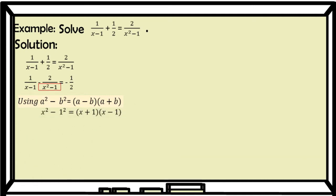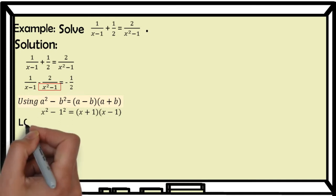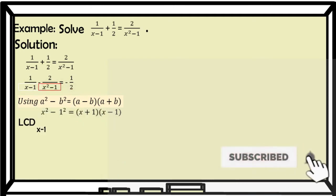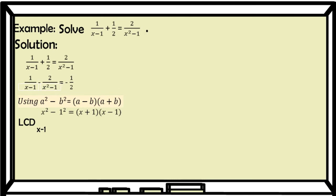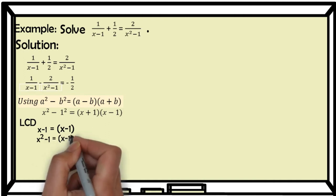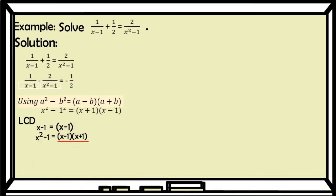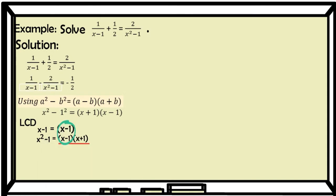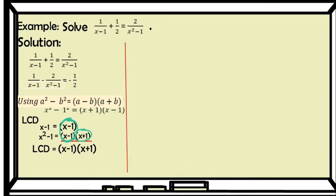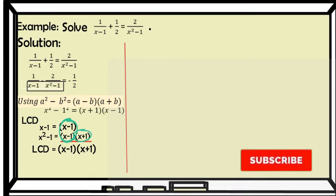So x squared minus 1 factors into (x plus 1)(x minus 1). Then, find the LCD of (x minus 1) and (x squared minus 1). The first denominator is (x minus 1). The second is (x minus 1)(x plus 1). We find the common factor — that is (x minus 1), written as 1, and then (x plus 1). So our LCD is (x minus 1)(x plus 1), and we will use that to solve for the roots.